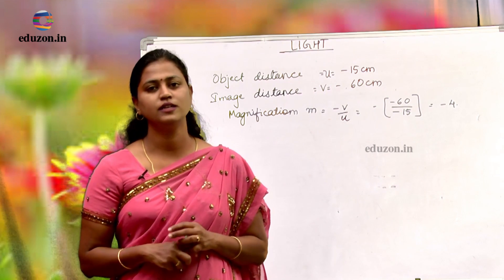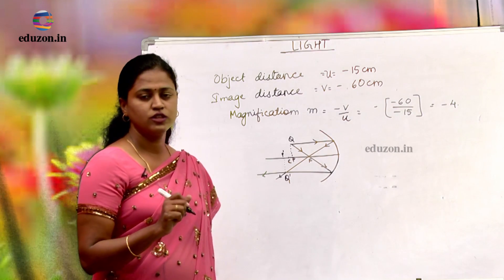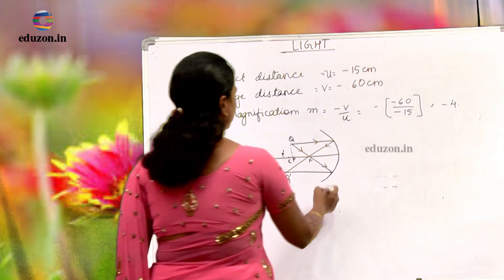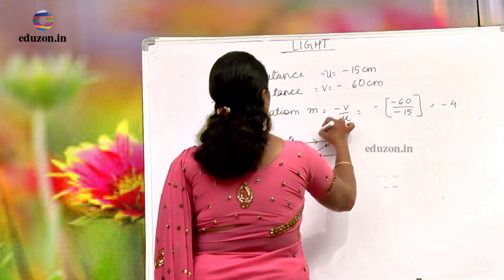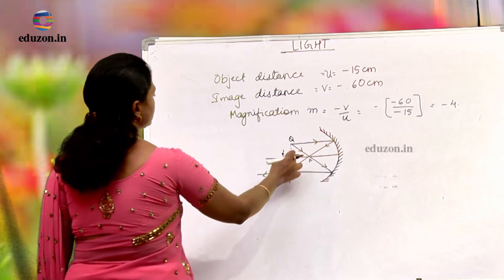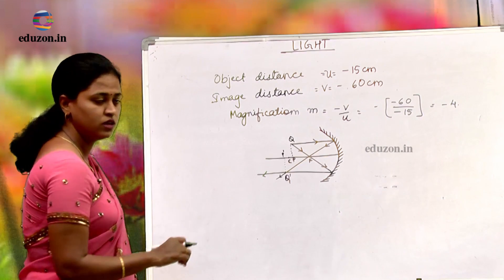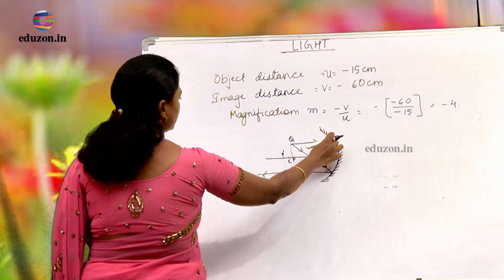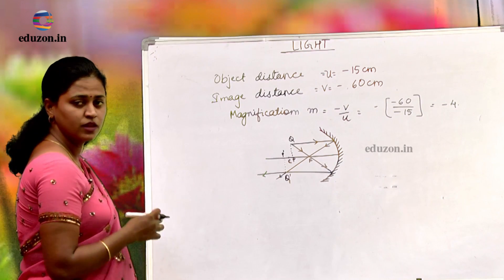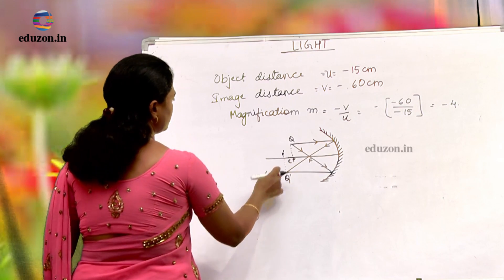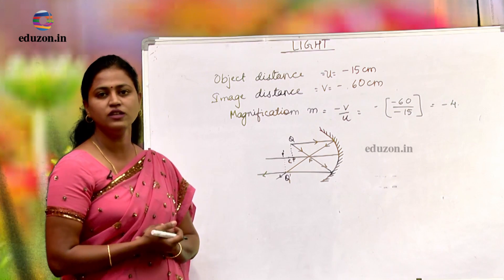Now we have to draw the ray diagram. Let us see how the ray diagram looks. This is the concave mirror. The object is placed PQ between the center of curvature and the focus. These are the lines that are reflected from the mirror and the image is formed at P dash Q dash, which is beyond the center of curvature.